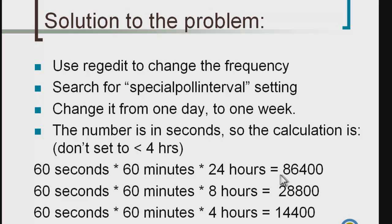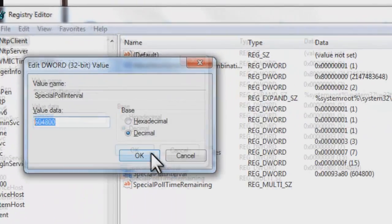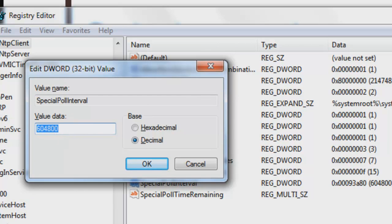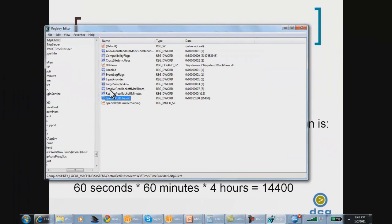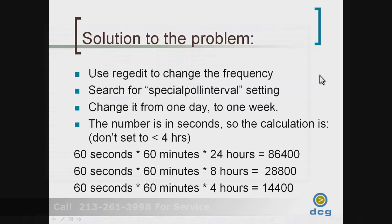I'm going to set mine to 24 hours, which is 86,400 seconds. Jumping back into RegEdit — highlight the field, type 86,400, and save it. Now I'm set for once a day. The great thing about this is that it's going to adjust the time for you, even if your PC is drifting a little bit.